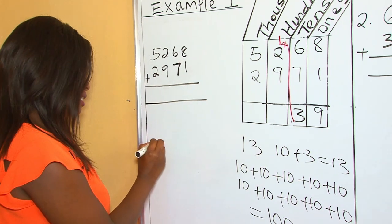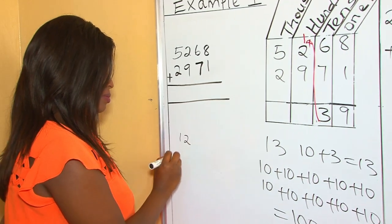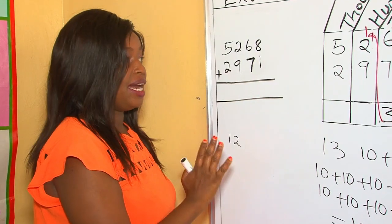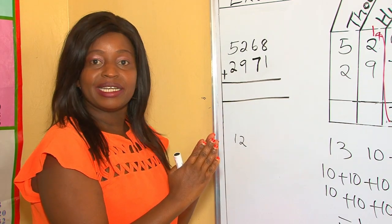So also, 12 hundreds, we regroup them. That is, 10 hundreds makes 1000.